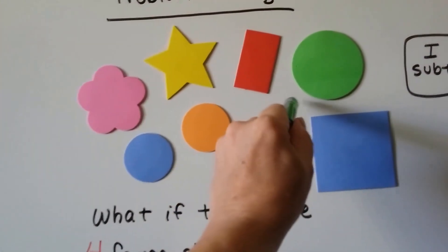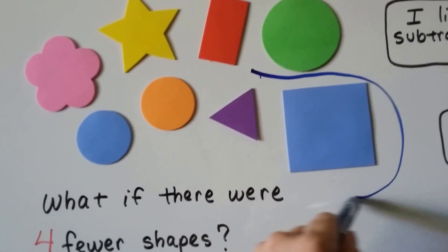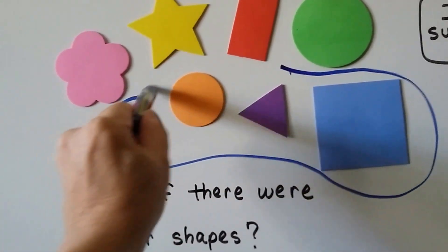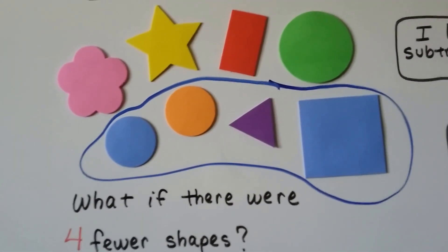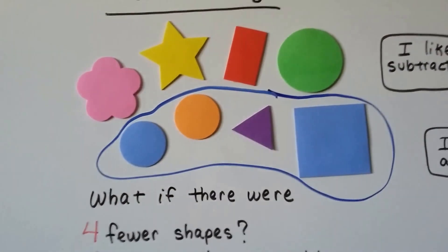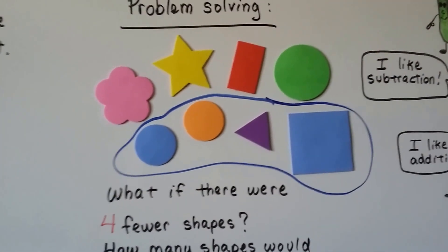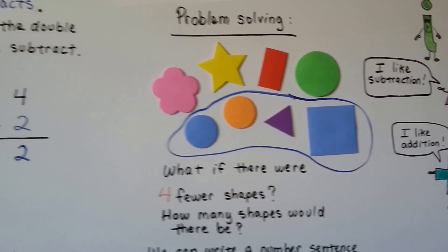See, we could just take these away, and we'd have 1, 2, 3, 4 left. See, so doubles can help us subtract.